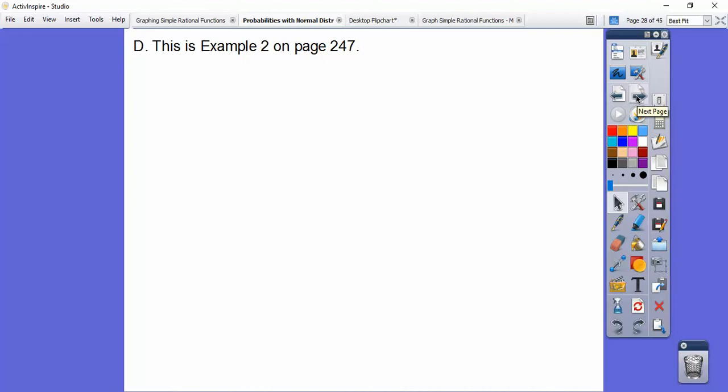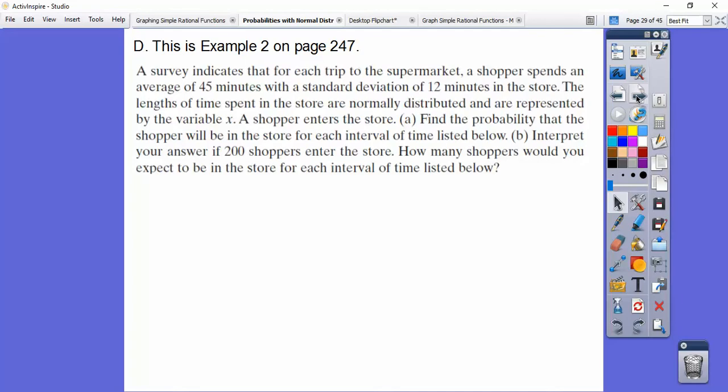All right, so this is our example on page 247. So it goes like this. A survey indicates that for each trip to the supermarket, a shopper spends an average, here's our mean, of 45 minutes with a standard deviation of 12 minutes in the store. Okay, the lengths of time spent in the store are normally distributed and all represented by the variable X. So here we go. A shopper enters a store.